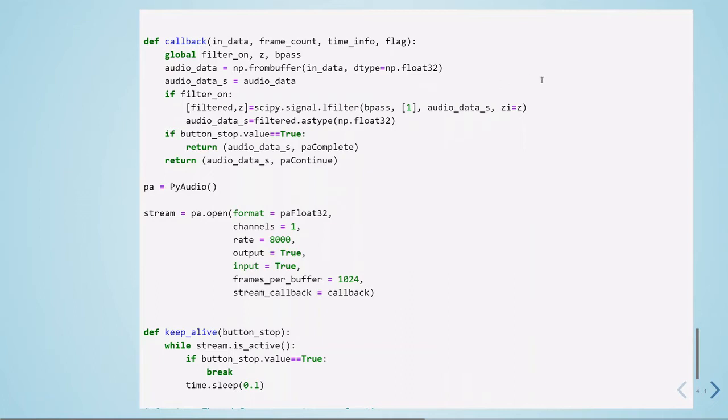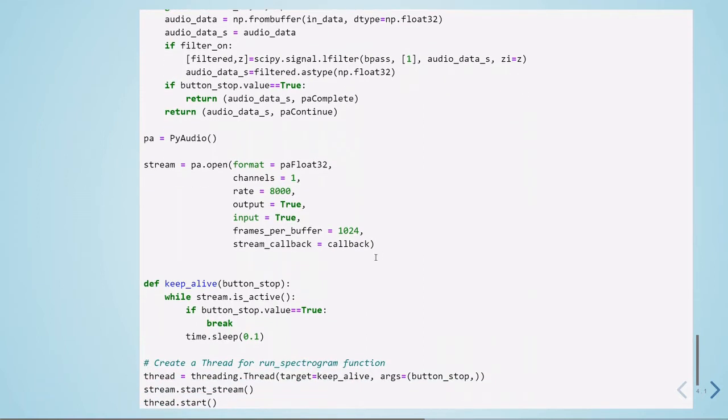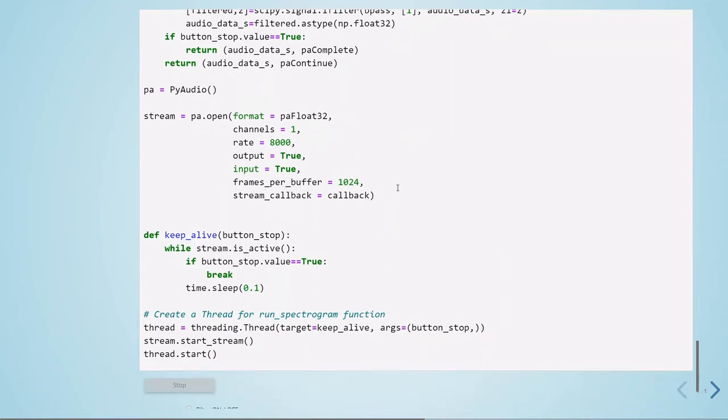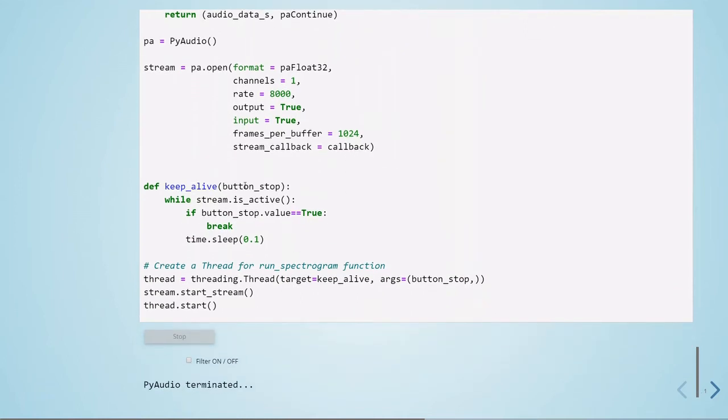Here we are defining our stream for PyAudio. We are using 8 kilohertz, it's mono, we want to get the audio input and we want to listen to the audio so we are also setting output to true. We are using 1024 frames per buffer, and here is the callback that we defined, the stream_callback we need to pass here. PyAudio recommends this keep_alive.